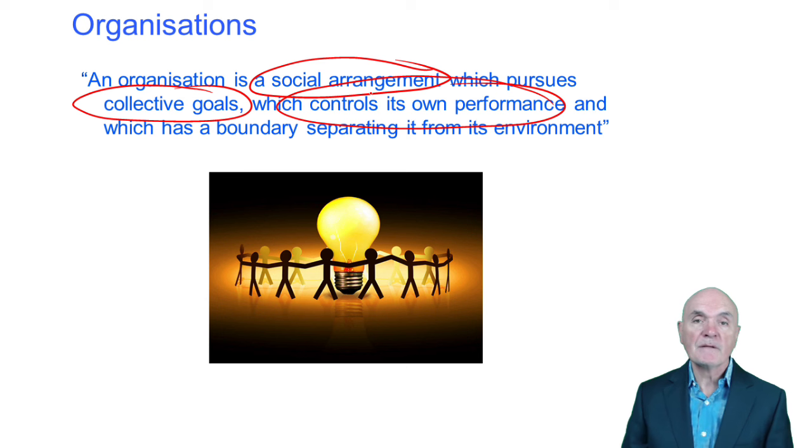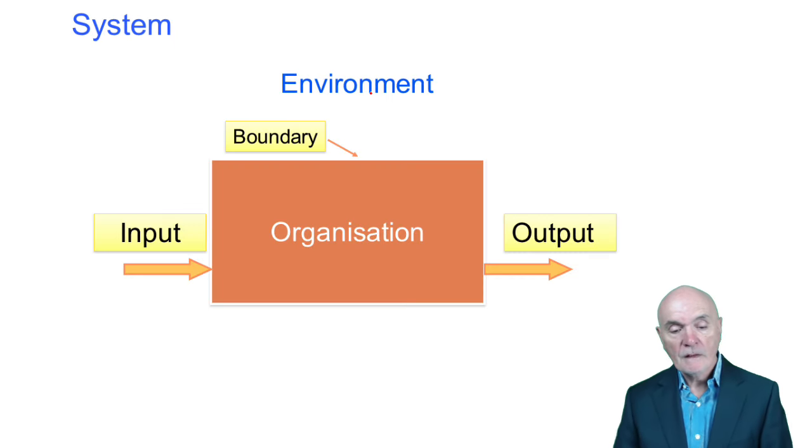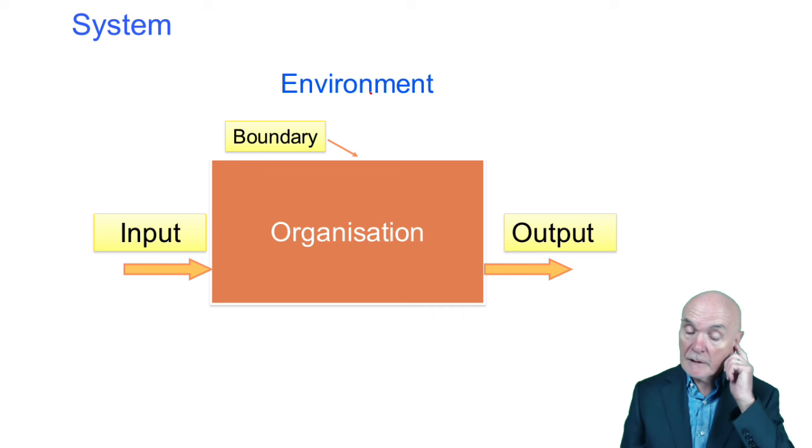And it has a boundary separating the organisation from the environment. We know who is in the organisation, we know who is outside the organisation, we know whom we can give orders to and whom we can't give orders to and the like. So this business of the environment, this comes from a bit of theory called systems theory. We won't go into it very much.